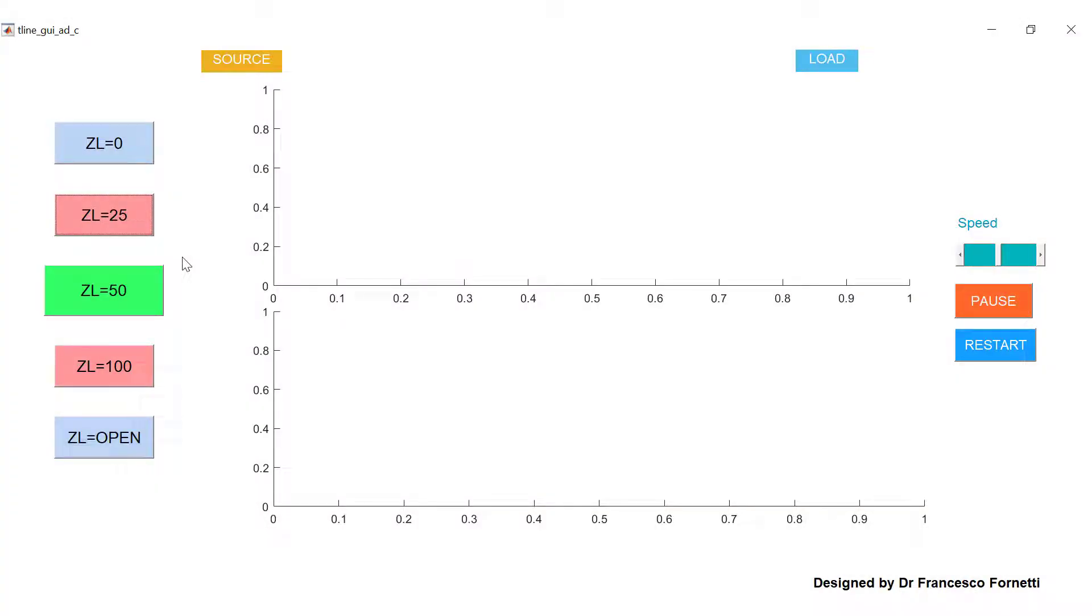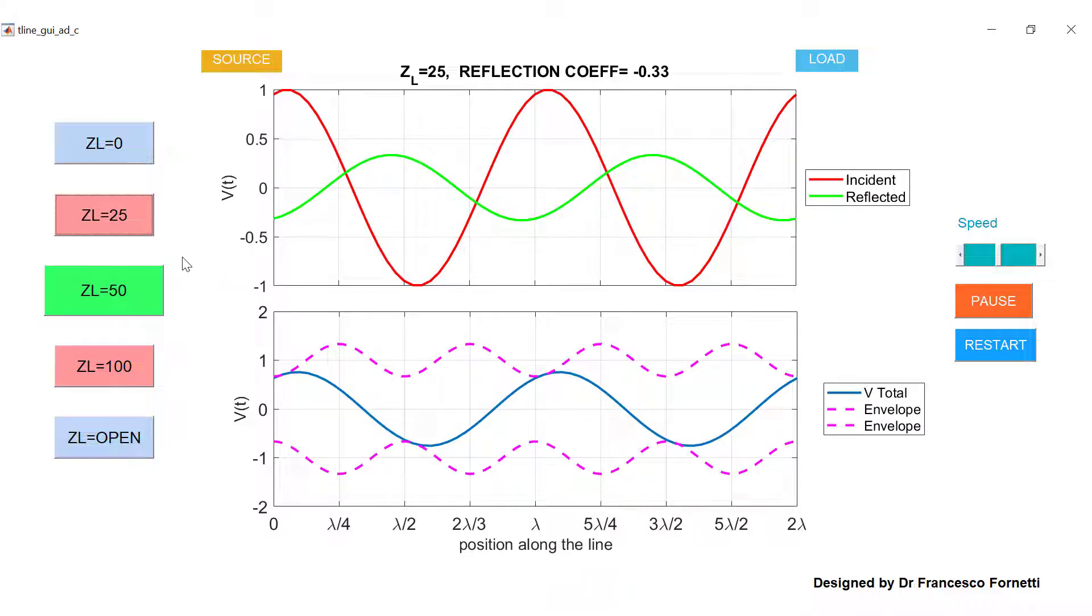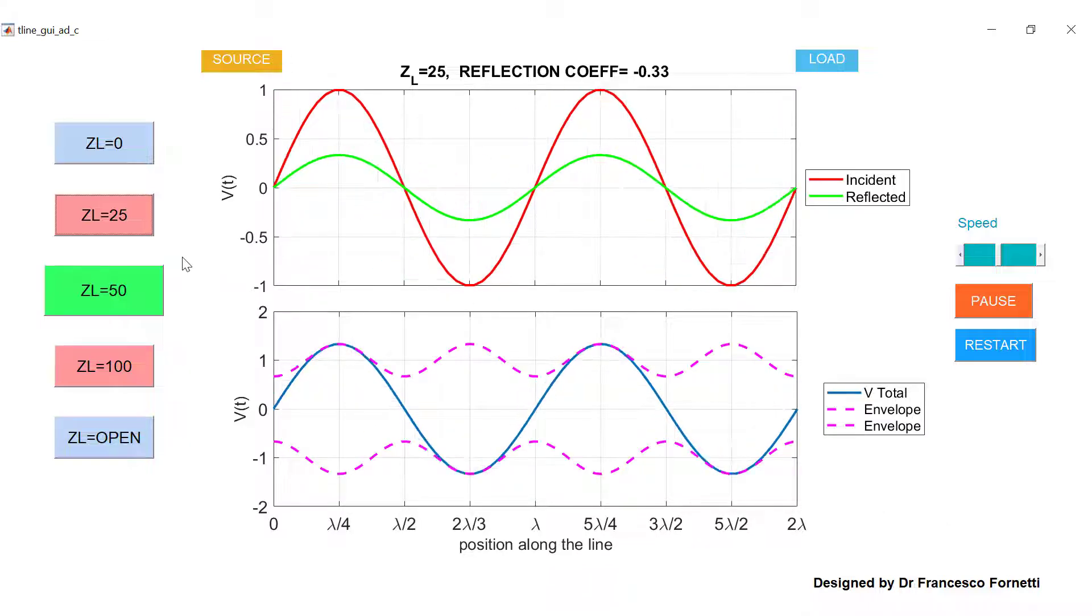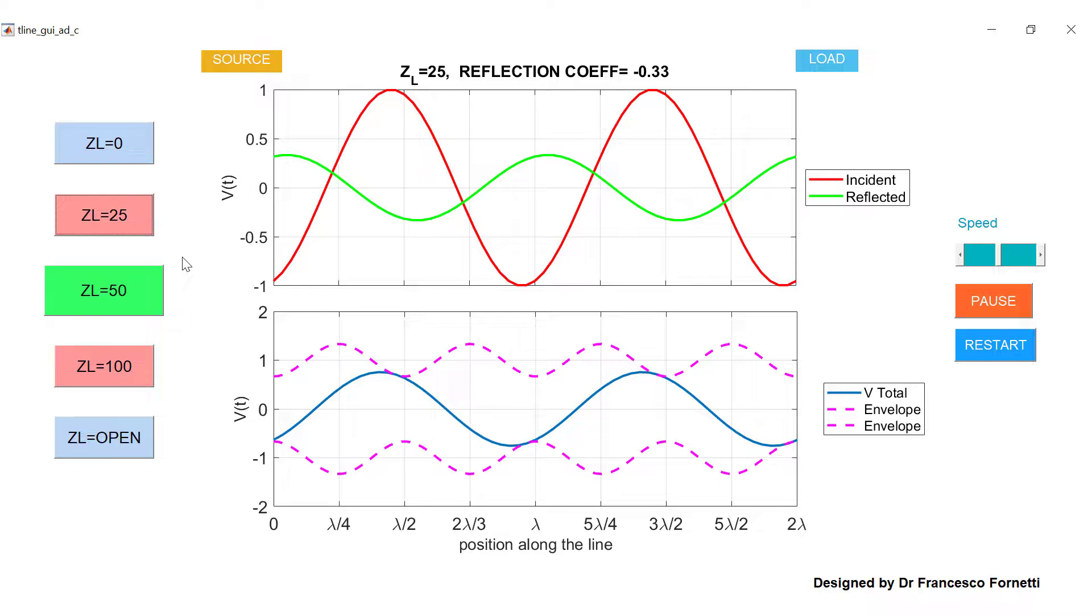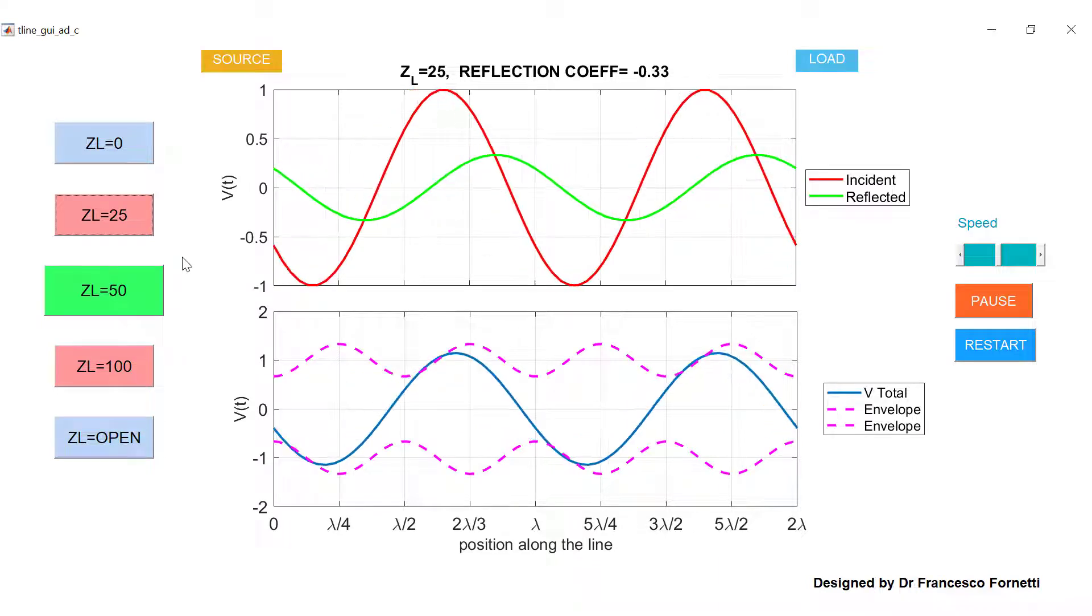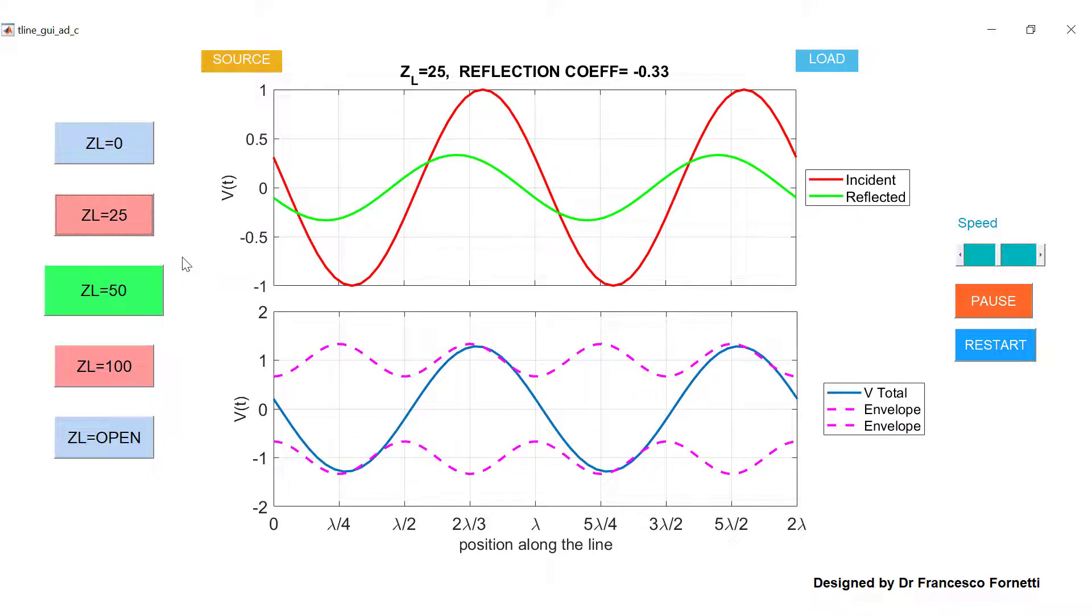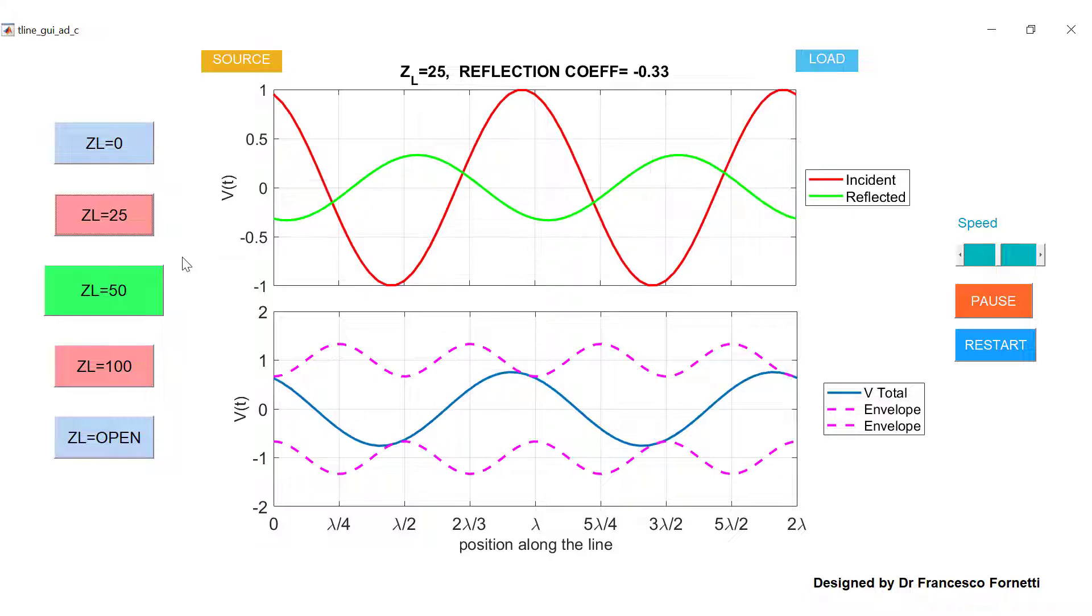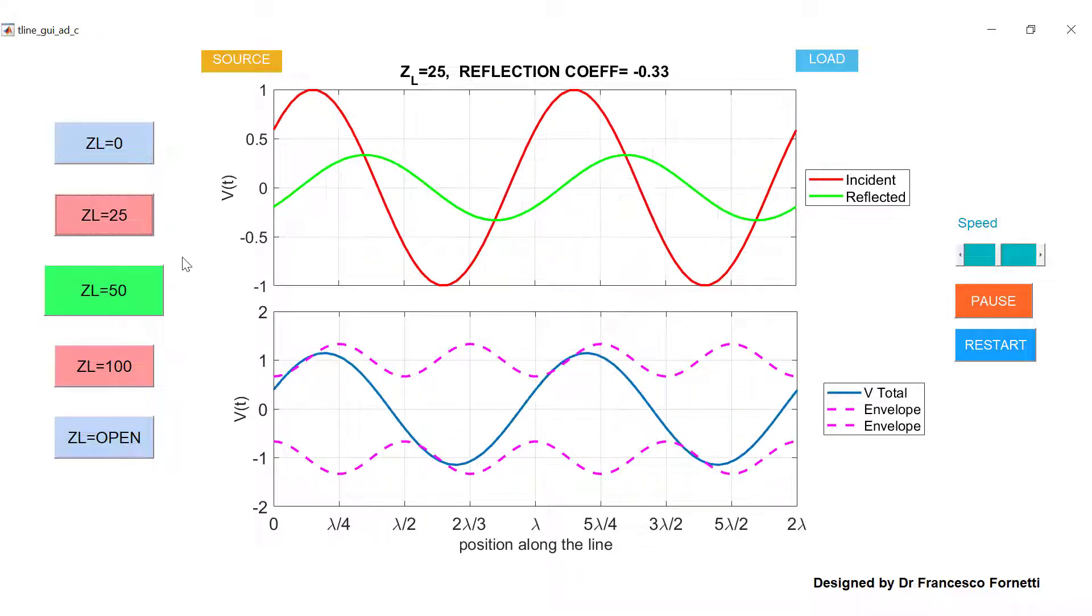Our 2D animation allows us to see what happens across the entire length of a transmission line when it is terminated with different loads. It successfully represents incident and reflected voltages and how they add together to generate a voltage wave that propagates down the transmission line.